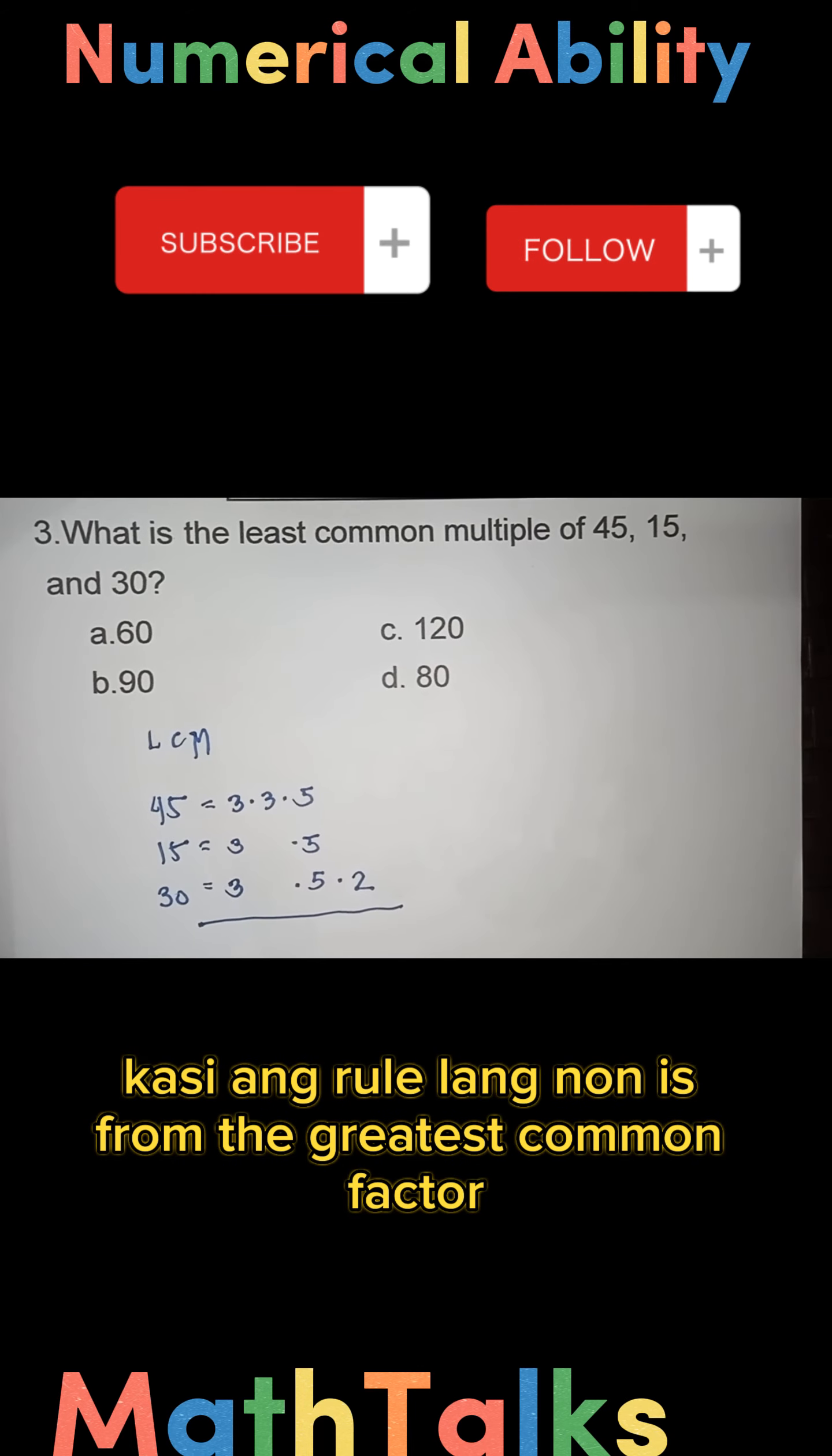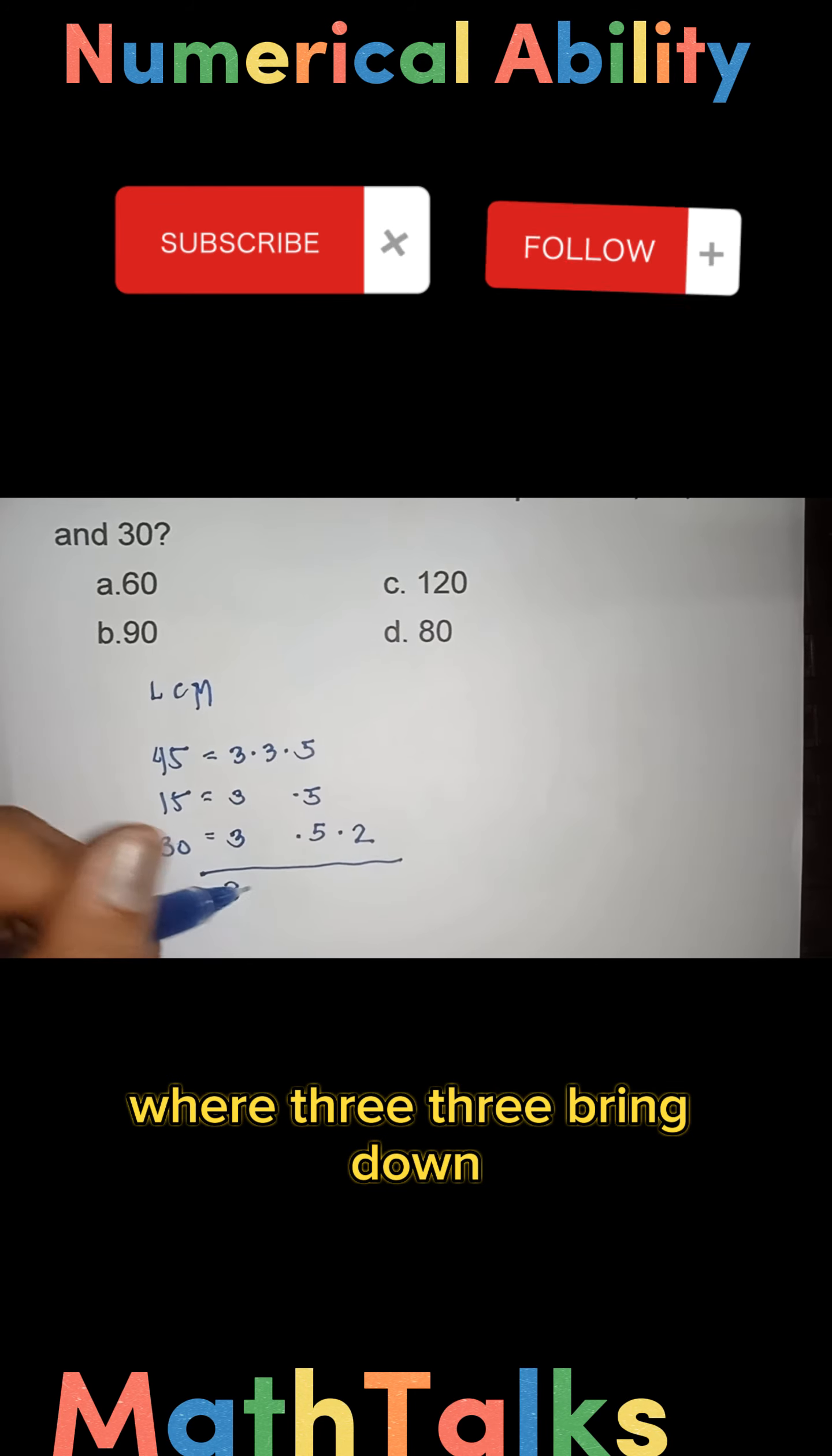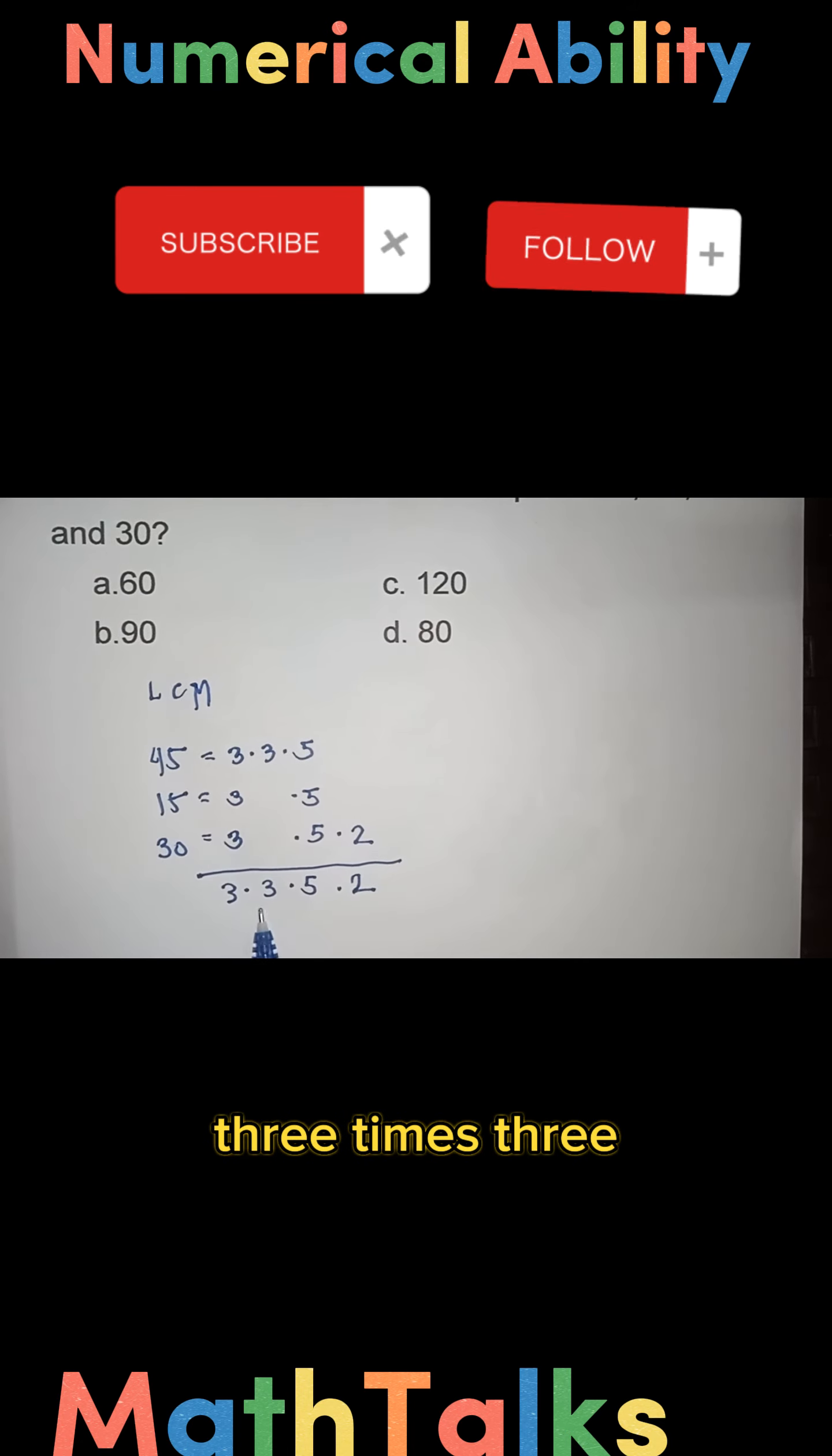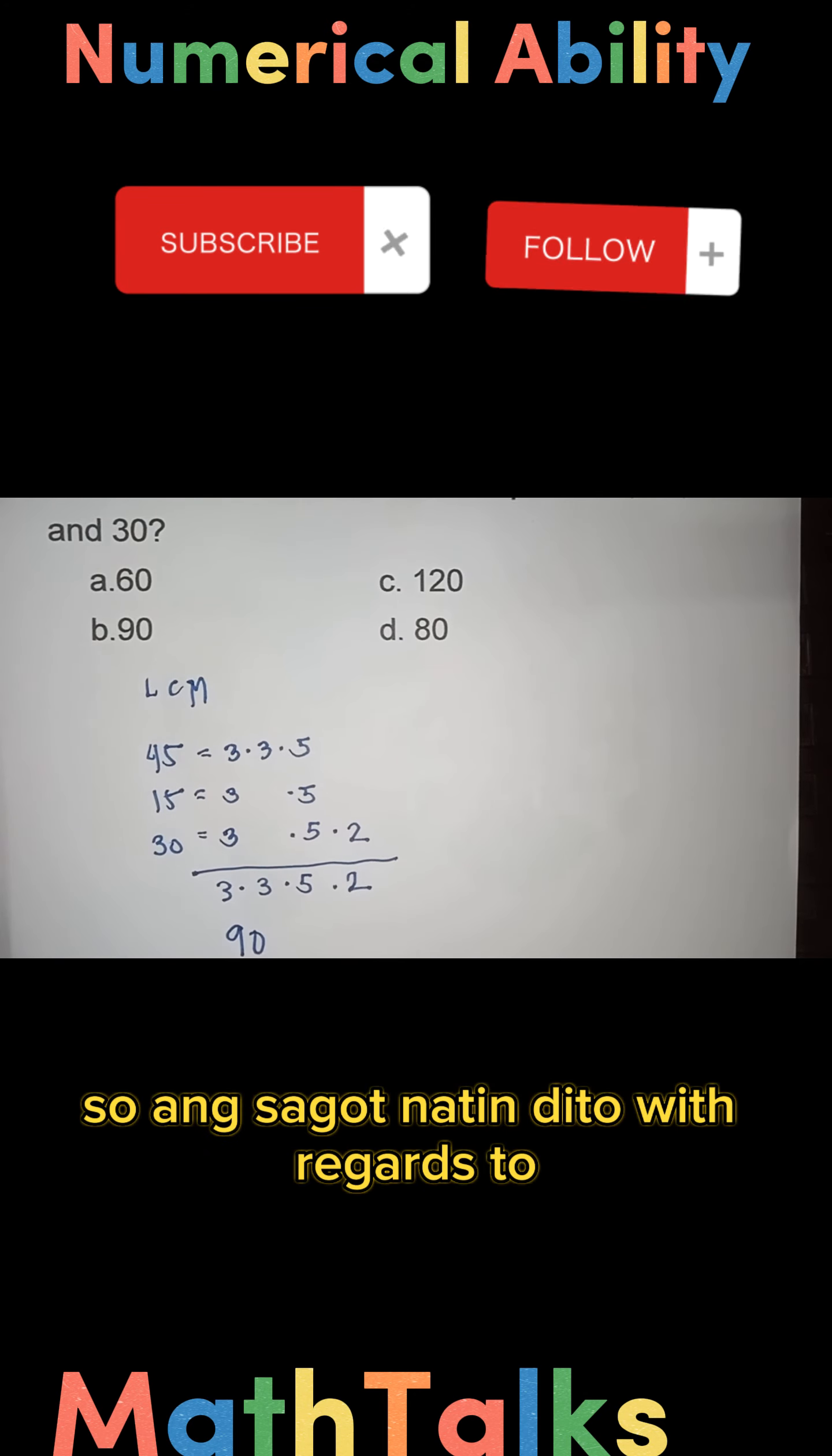We have three, three, bring down five, times two. Three times three is nine, times five is 45, times two we have 90. So there we go.